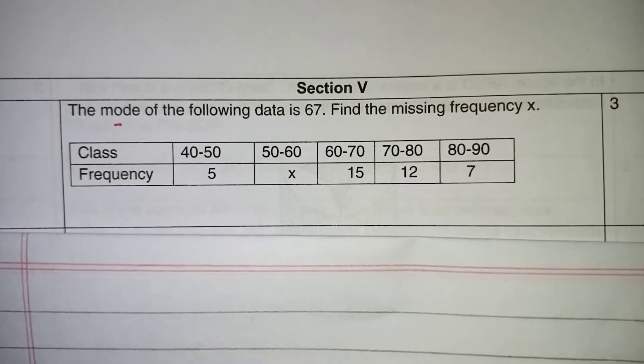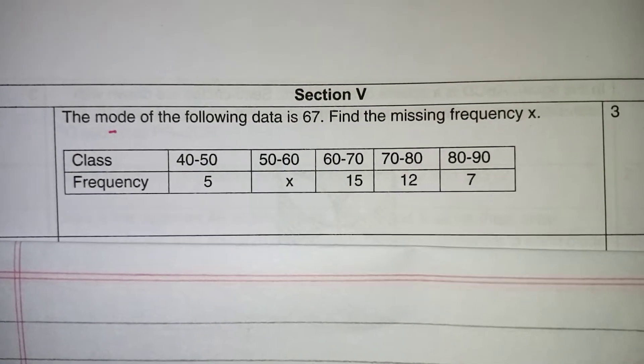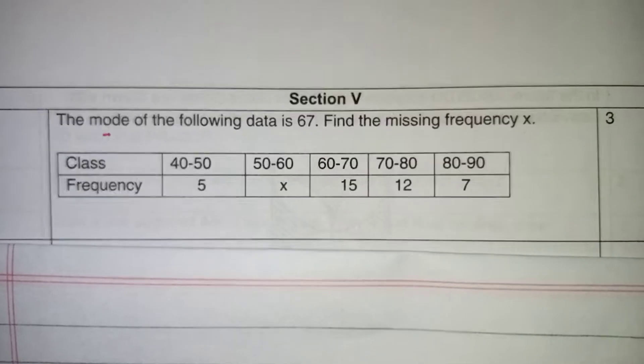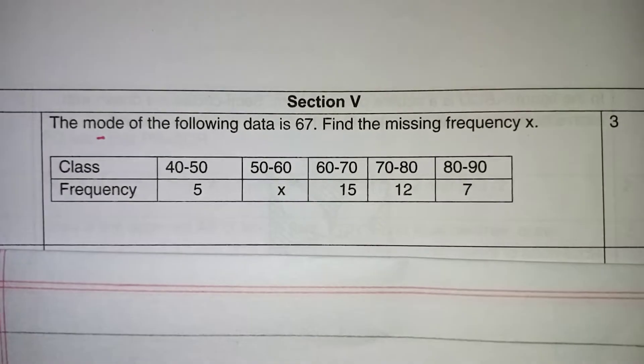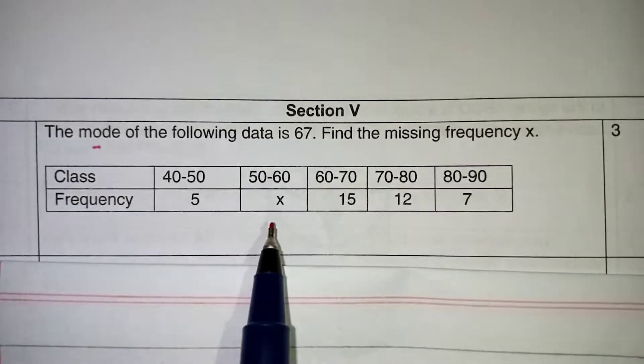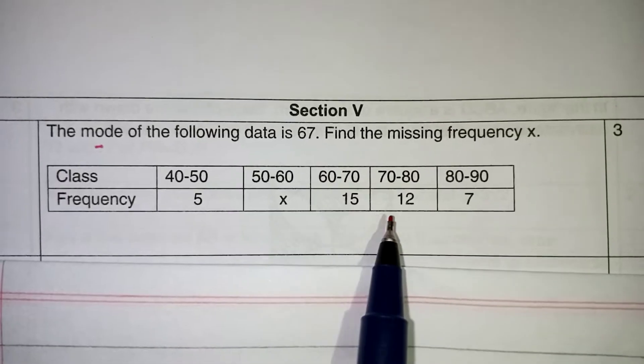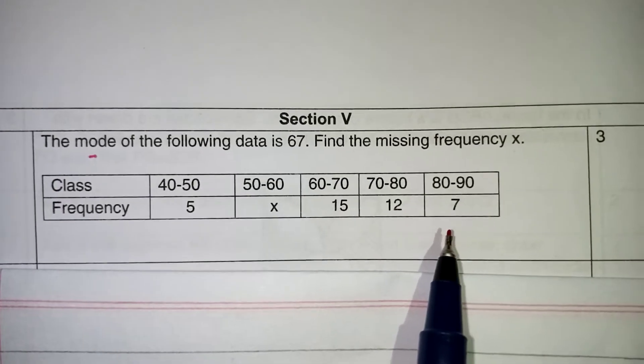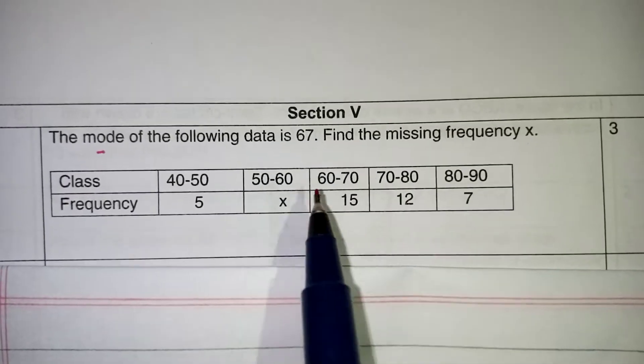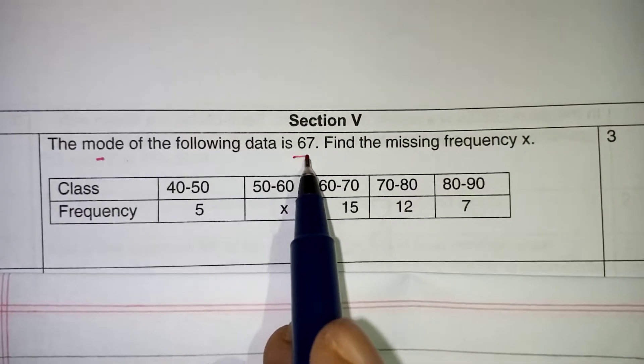The basic thing for finding the mode, the highest frequency should be taken as a modal class but here it is not possible because one of the frequencies is missing. So we cannot say which is the highest frequency in this table. So what we should do is, mode value is given as 67 right.